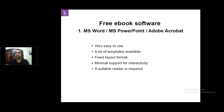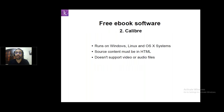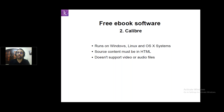Another software is Calibre, which is one of the most famous tools for creating EPUBs. It runs on Windows, Linux, and macOS. However, the source must be in HTML in order to edit documents and convert them to EPUB. Unfortunately, it doesn't support video or audio files.